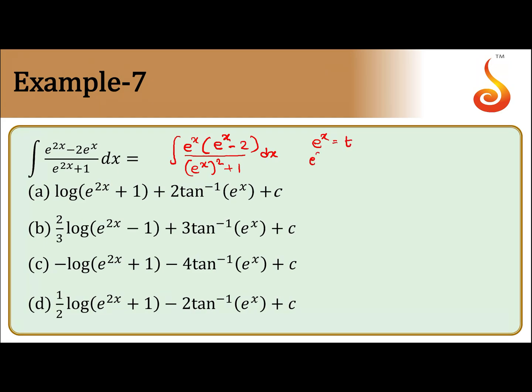So, e to the power x is equal to t, e to the power x dx is equal to dt. So this integral reduces to t minus 2 by t square plus 1, dt.